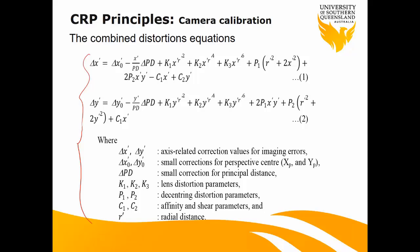How many parameters or unknowns do you have? There is a correction to the axis of the image — your x and y axis. There is a correction to your principal point to be on the exact center of the image. There is a small correction to the principal distance if your focal length is not exactly what the manufacturer says. K1, K2, K3 are your radial lens distortion. P1, P2 are decentering lens distortion. C1 and C2 are affinity and shear parameters — some coefficients that need to be applied.